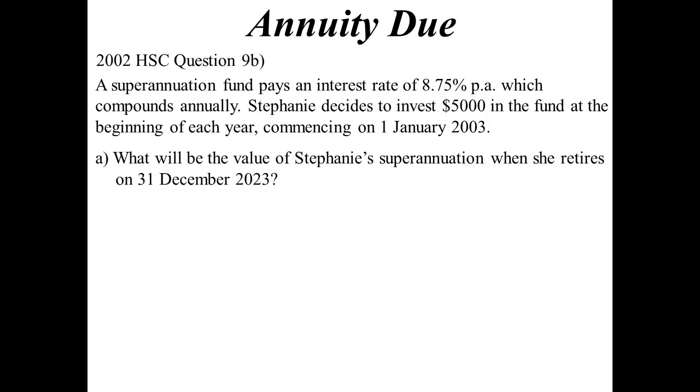All right. So let's have a look at annuity due. And we'll do it by looking at some HSC questions. So here's one from 2002. So a superannuation fund, 8.75% per annum it's going to pay. And so Stephanie decides to invest $5,000 and it's an annuity due. So we invest it at the beginning of each year. So what will the amount be when she eventually retires 20 years later? Okay, well, that first amount she invested has been invested for 21 years. So using our compound interest formula, that'll be 5,000 times 1.0875 to the power of 21.